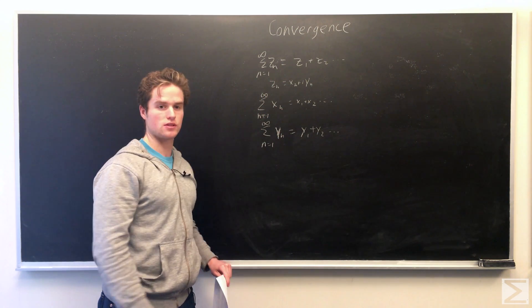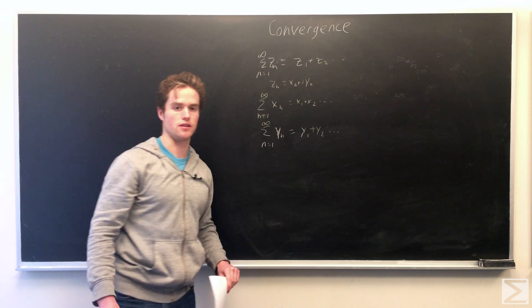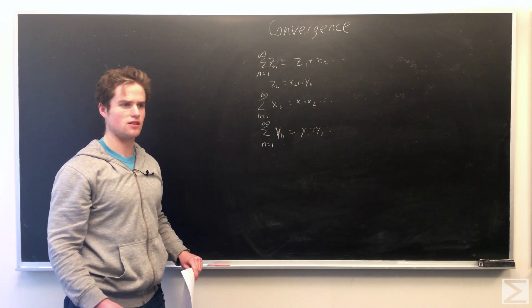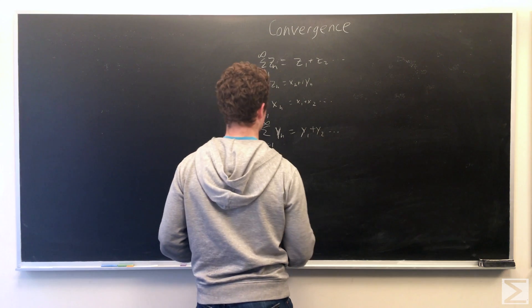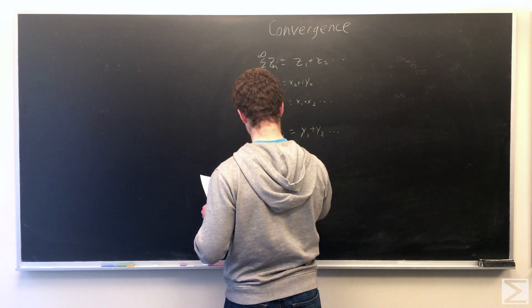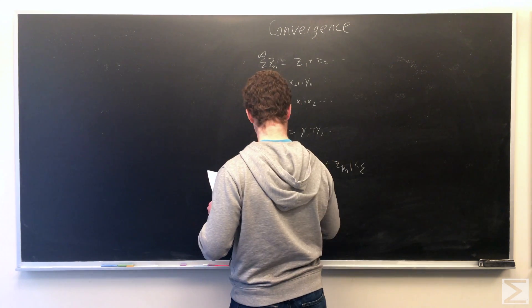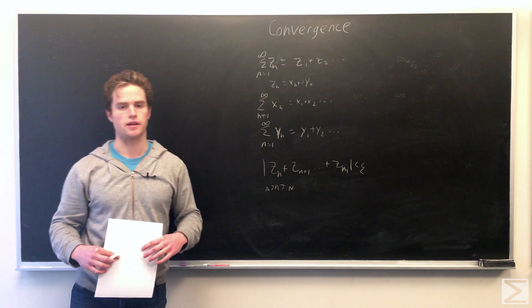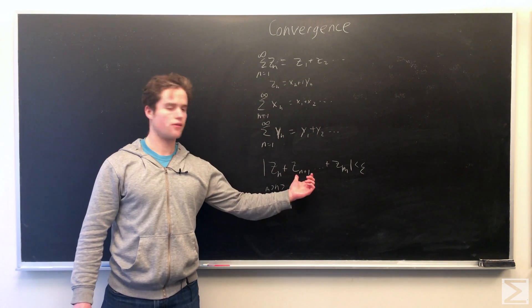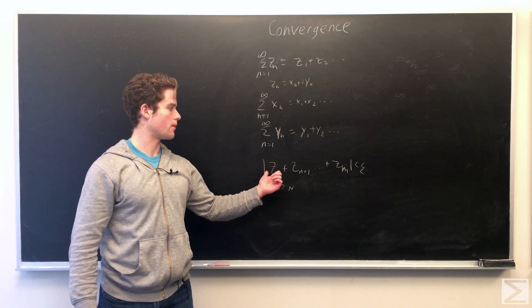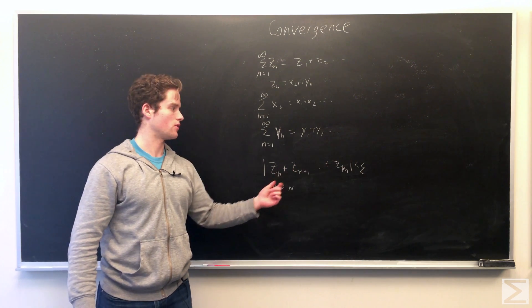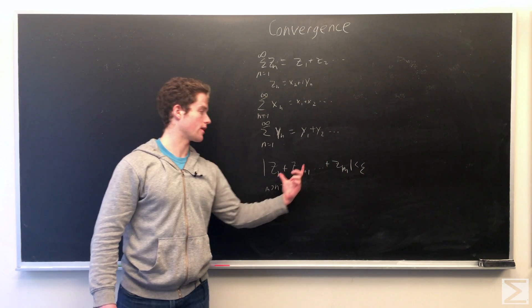So another way to establish convergence of a complex series is Cauchy's criteria. Cauchy's criteria is like for real numbers, but we make sure we have the moduli here. So epsilon is a real number, we get a real number here.